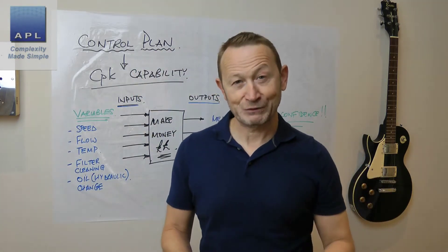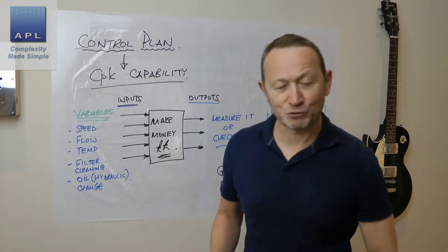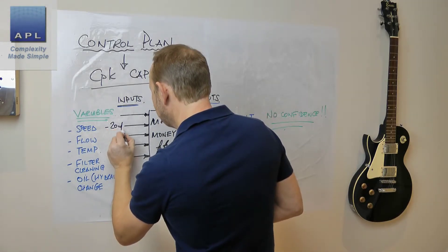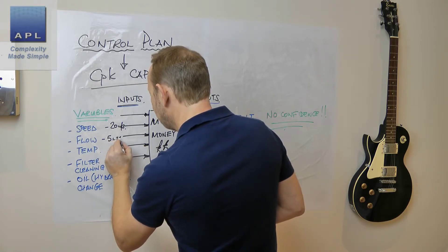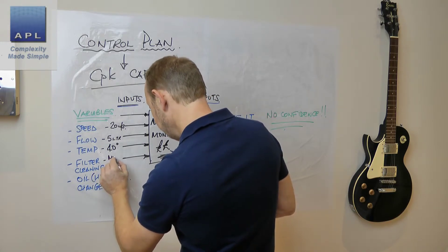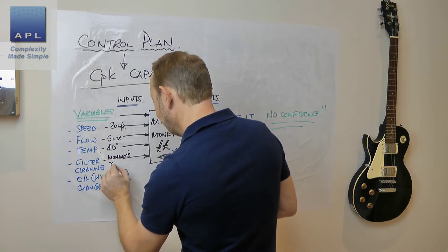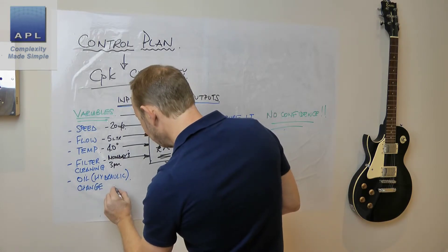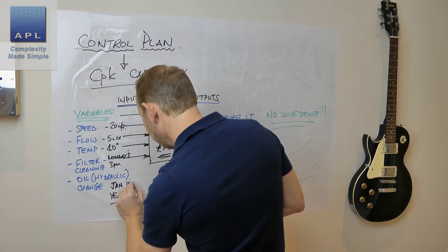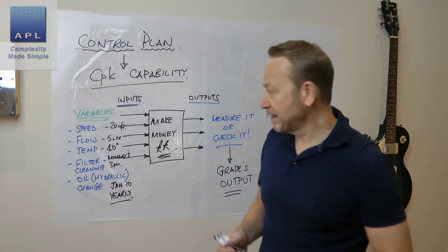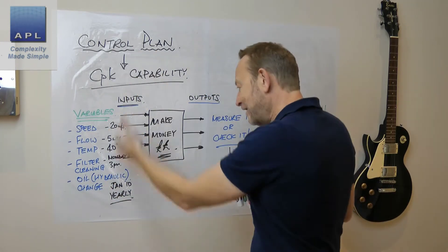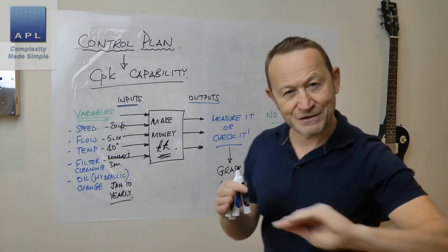And then what a control plan does is specify the rule and lock them down. So the rule could be: speed — 20 meters per second; flow — 5 liters per minute; temperature — 40 degrees; filter cleaning — Mondays at 3 p.m.; oil change — January, yearly. That sort of thing. And that is a control plan. Because if you adhere to those five things — and of course there would be hundreds of these in practice — those outputs work. That's a control plan.